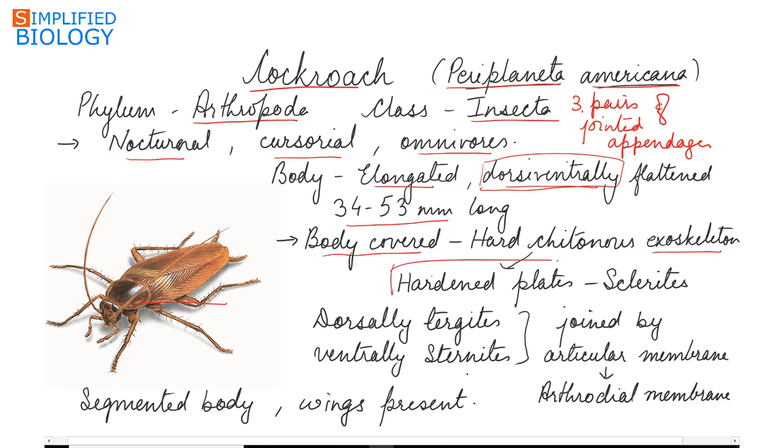These are hardened plates called sclerites. They are present in each segment. Dorsally they are referred as tergites and ventrally they are referred as sternites. They are joined together by a flexible articular membrane called the arthrodial membrane.